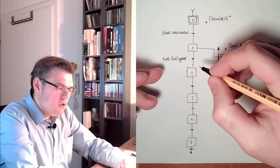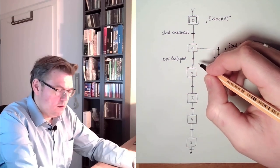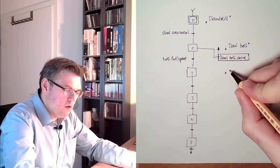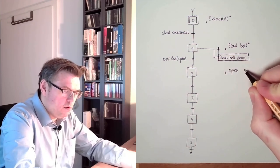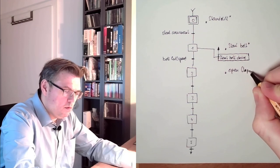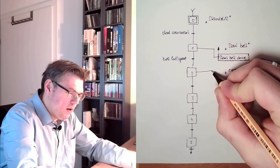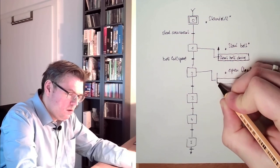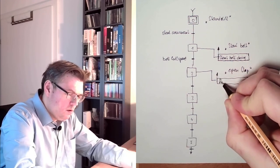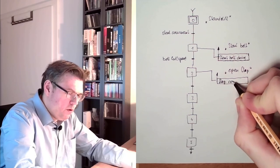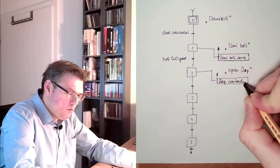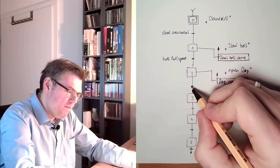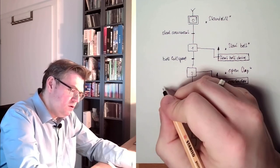And then the next transition is belt at full speed. So, step number two would be open flap. Command. Output to flap contactor. Transition. Flap open.